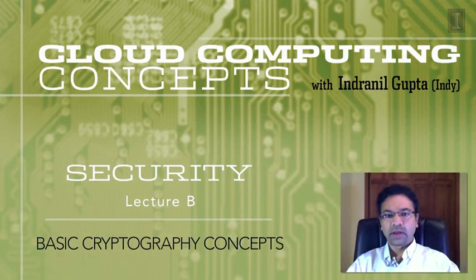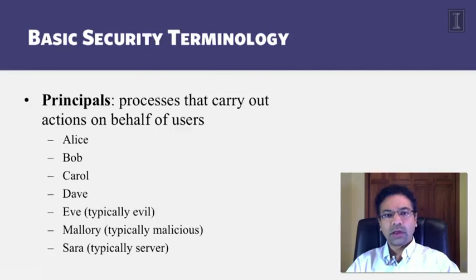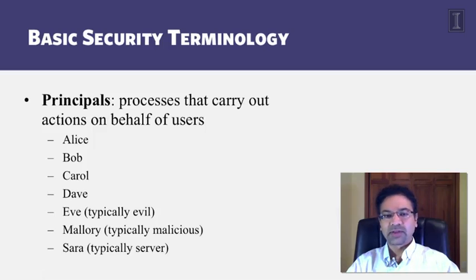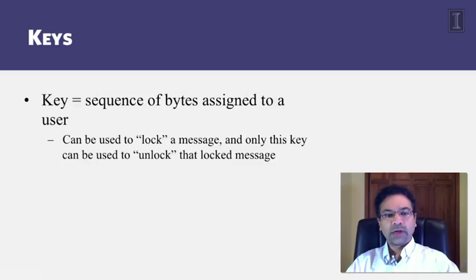In this lecture we're going to see some basic cryptography concepts. These are applicable to not just distributed systems but computer systems in general. An important terminology used in security protocols is that of principals. A principal is a process that carries out operations or actions on behalf of a user. Alice, Bob, Carol, and Dave are common principal names. Eve is typically an evil attacker, Mallory is typically malicious, and Sarah is sometimes used as the server.